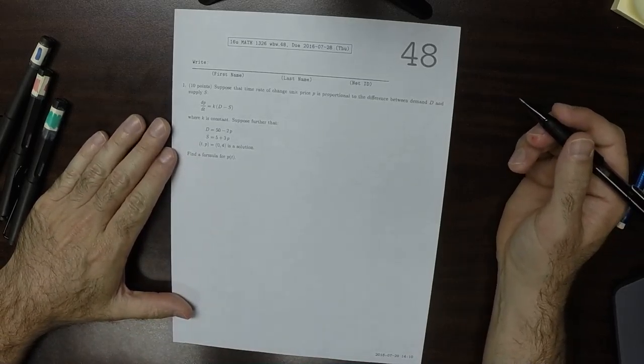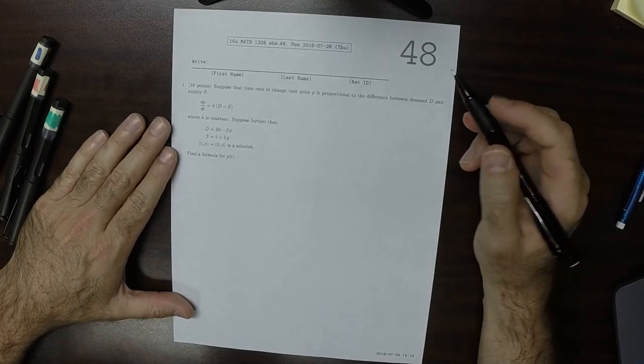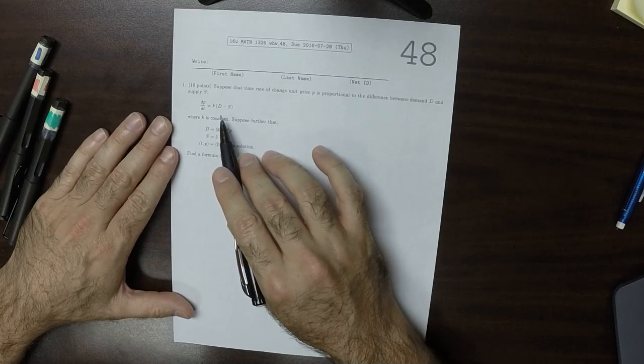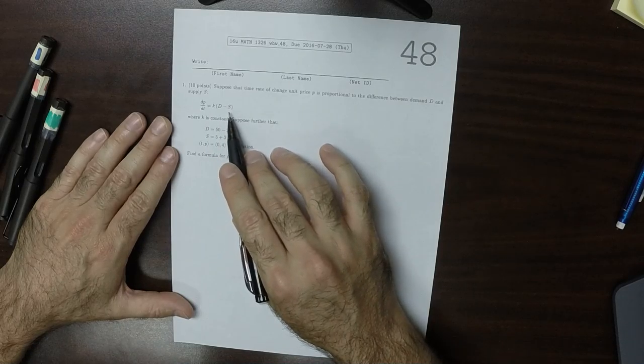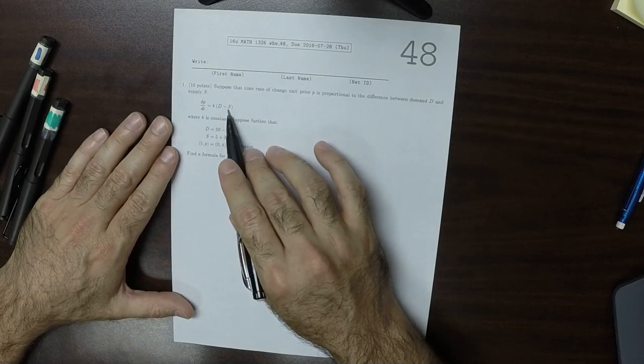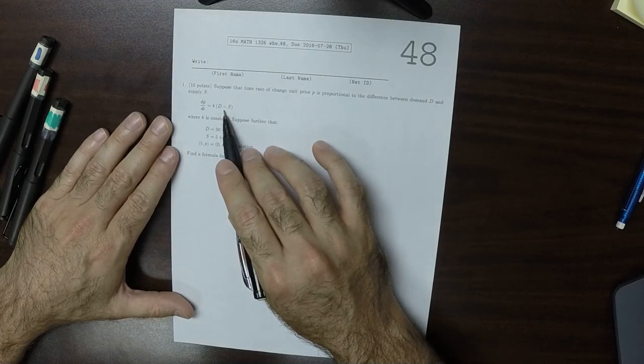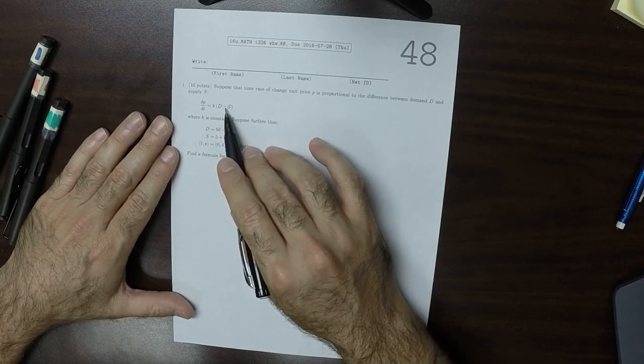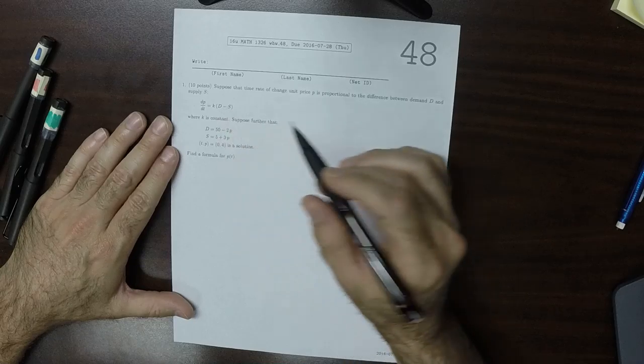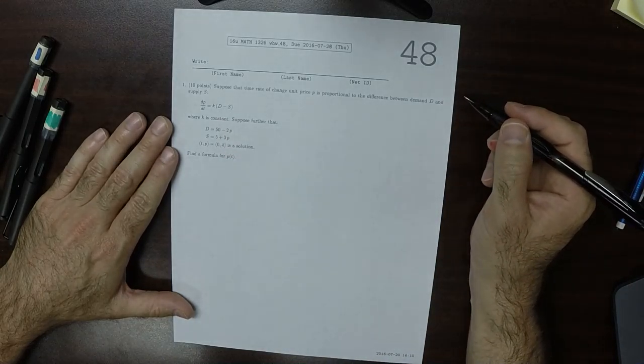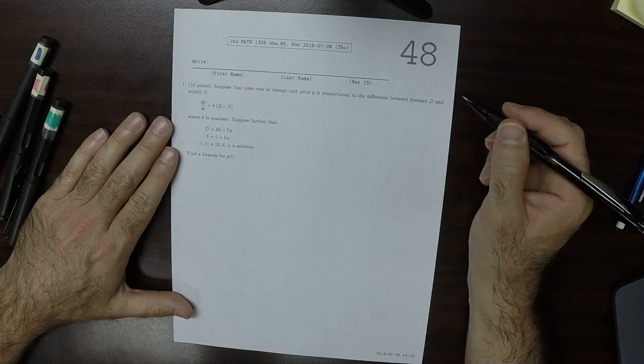So the story says that the price is proportional to the difference between demand and supply. So if demand is bigger than supply, over time the price will go up. And if demand is less than supply, over time the price will go down. So that's the meaning of that differential equation.